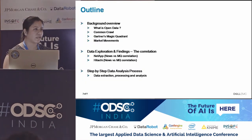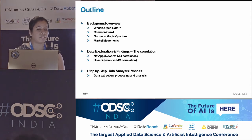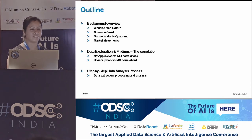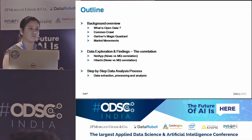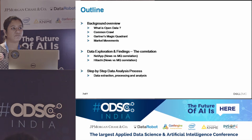I'll briefly describe what open data is and Common Crawl — has anyone here heard of Common Crawl? I'll be talking a little bit about what is Gartner's Magic Quadrant and what I mean by market movements. We've done a ton of ad hoc analysis on this Common Crawl data and it is really hard to share all our interesting findings in this little talk. But I will be covering some, and then we'll do a deep dive into the step-by-step data analysis process from data extraction through pre-processing, analysis, visualization, and interpretation of results.